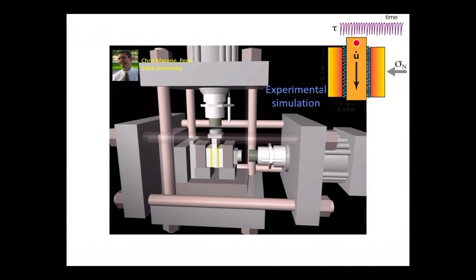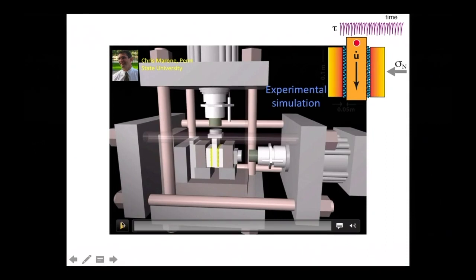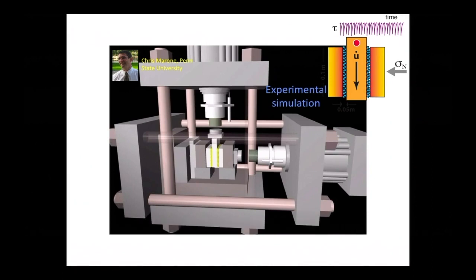Here's our earthquake machine located at Penn State. Chris Marone operates this — he doesn't call it the earthquake machine, I do, and now all of his students do. We hold a three-block system in place with an applied load, drive this block down at constant velocity, and measure the sound coming out of the system. We can measure the shear stress and the gouge layer thickness. There are two gouge layers because of the nature of the experiment.